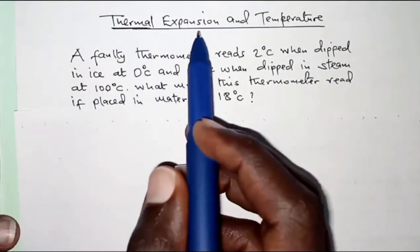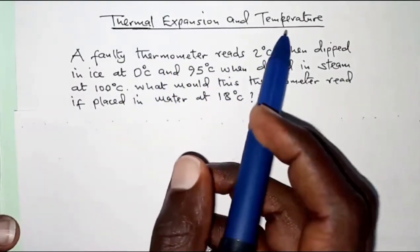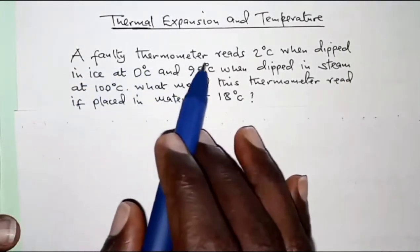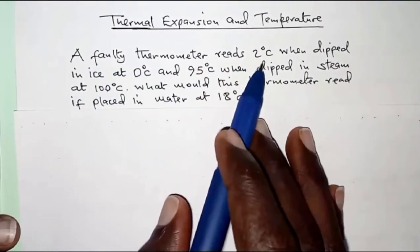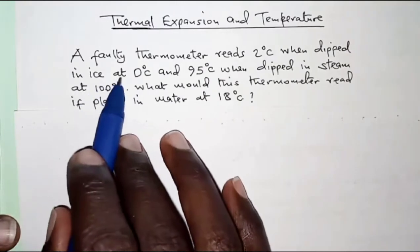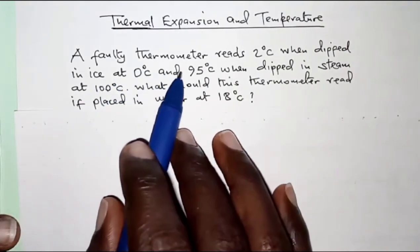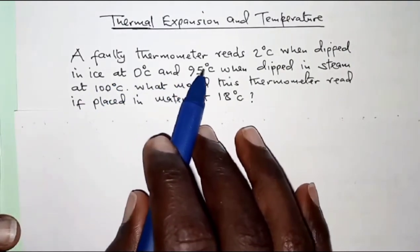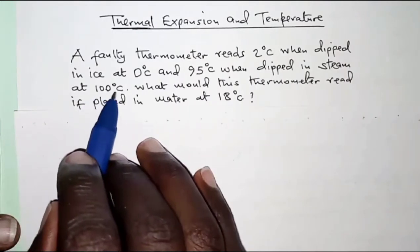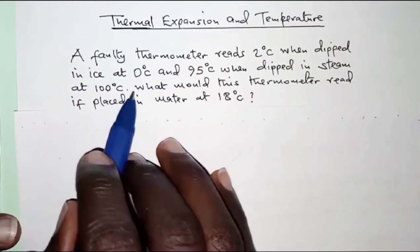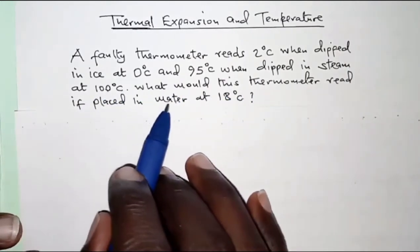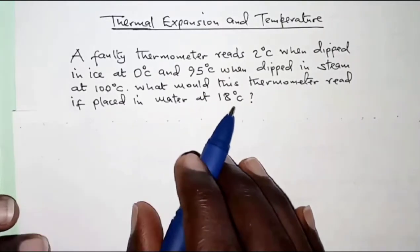The question today is on thermal expansion and temperature. A faulty thermometer reads 2 degrees Celsius when dipped in ice at 0 degrees Celsius, and 95 degrees Celsius when dipped in steam at 100 degrees Celsius. What would this thermometer read if placed in water at 18 degrees Celsius?